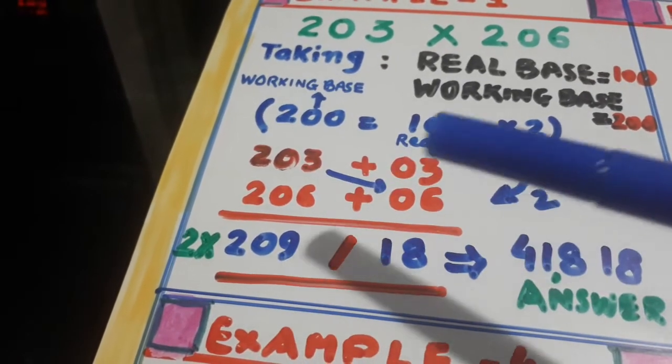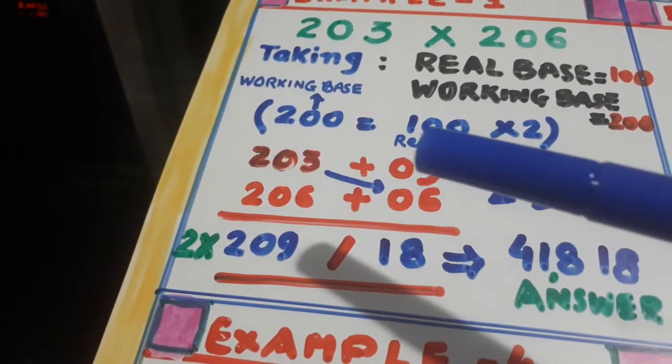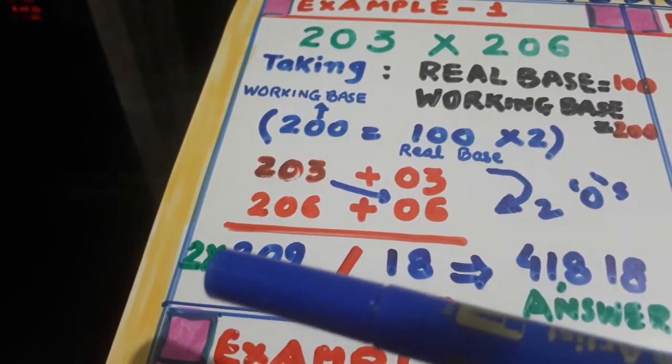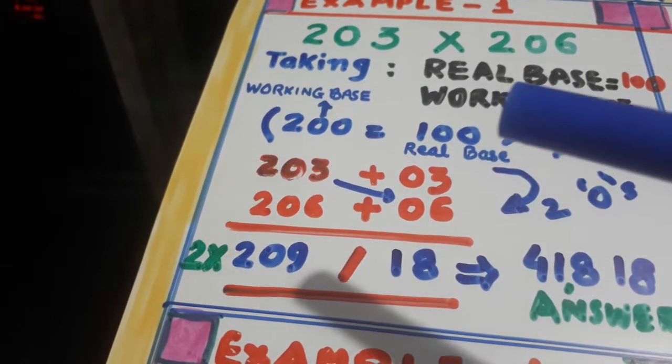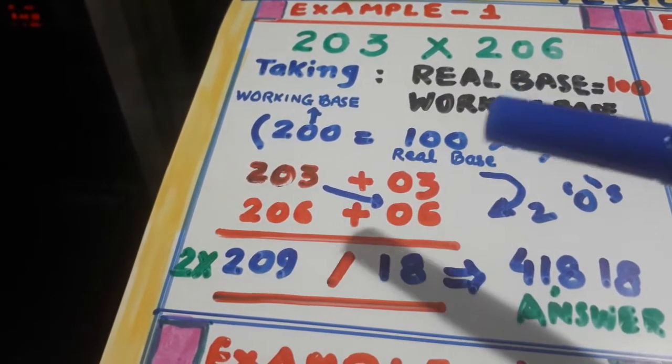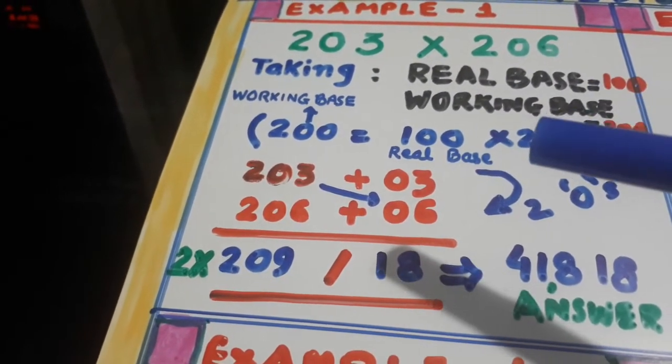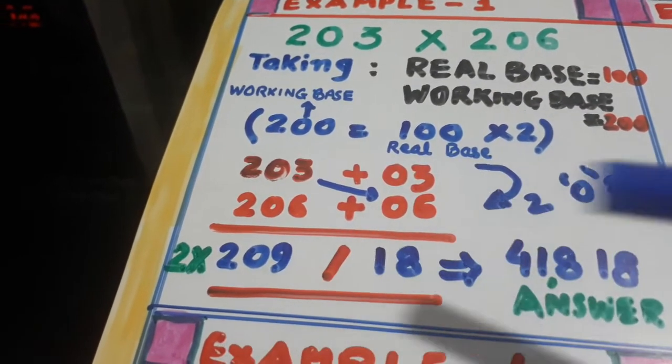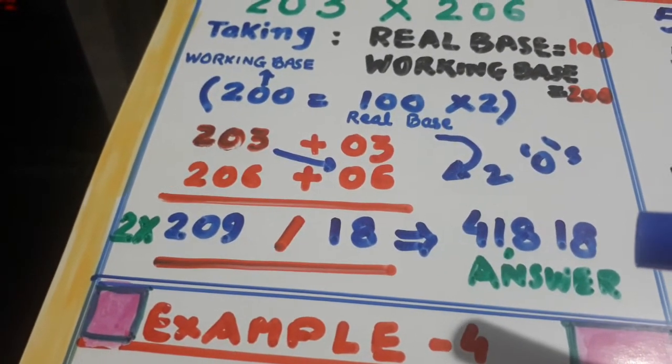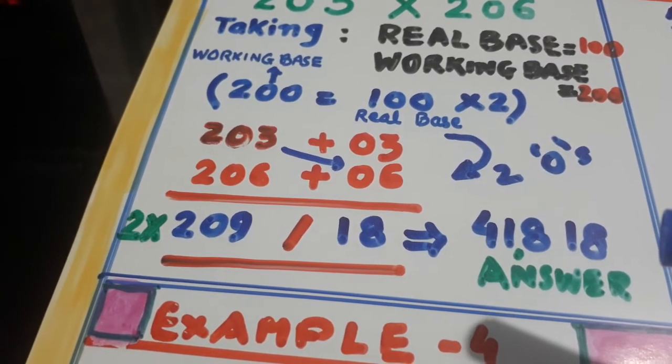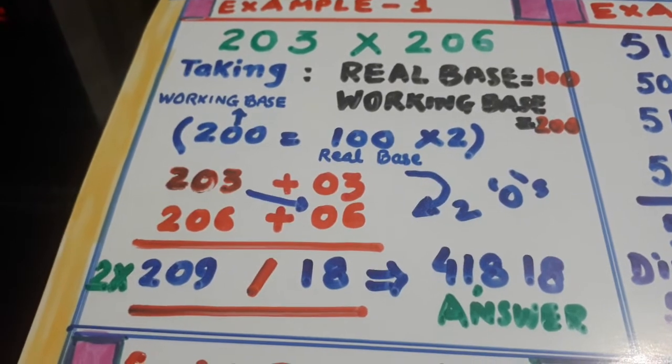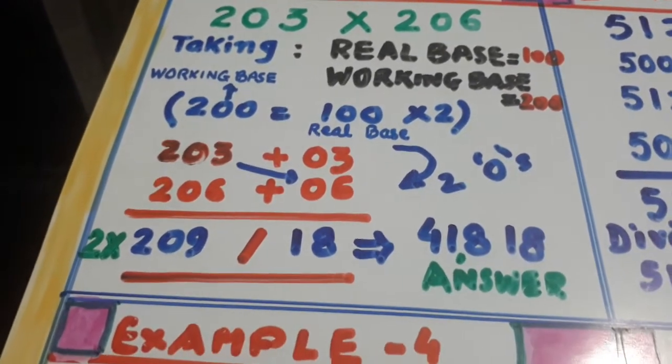You can take it this way also, this is 206 plus 3, 209. So take any of the diagonals. Multiply it with 2 because our real base is 100 and we have to multiply with 2. So just multiply with 2, the answer will come 41818. So this is very simple, very easy, very less time taking.